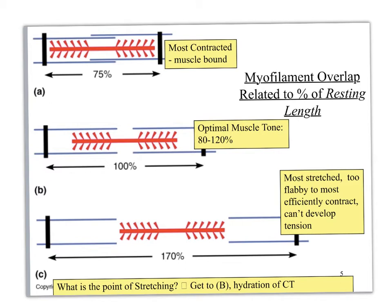Here's another picture showing the same concept. At optimal overlap, you have a good amount of space for contraction. With too much overlap in the middle — the muscle-bound version — big muscles look great but can't move as efficiently. With too little overlap, the flabby stretched-out muscle doesn't reach the center before the nervous signal runs out, so you don't get as efficient a contraction. Muscle length is directly related to how much tension or force can be generated.